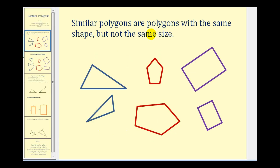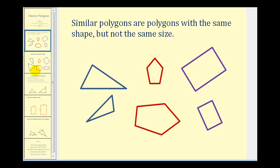Similar polygons are polygons with the same shape but not the same size. Here we see two similar triangles, two similar pentagons, and two similar rectangles. They're the same shape but different size.